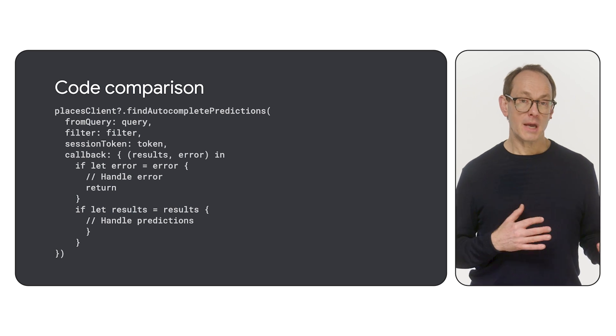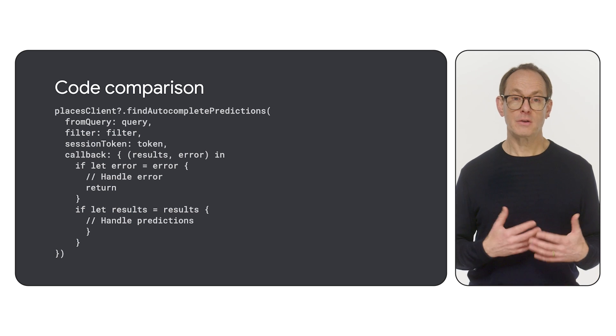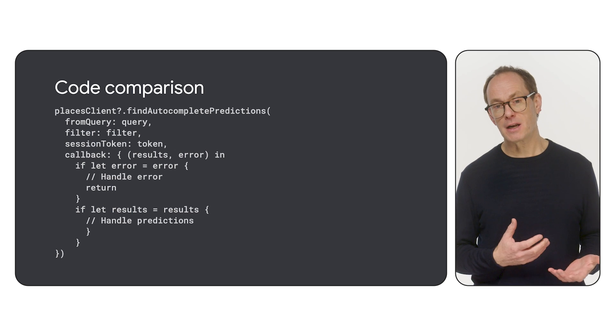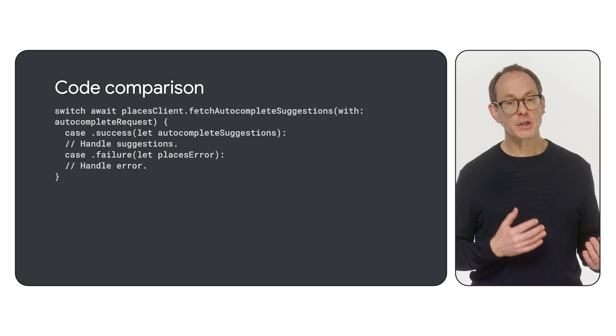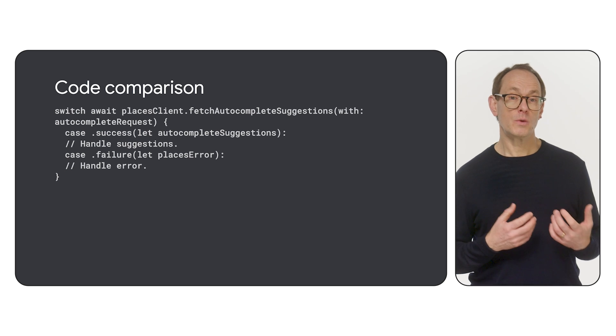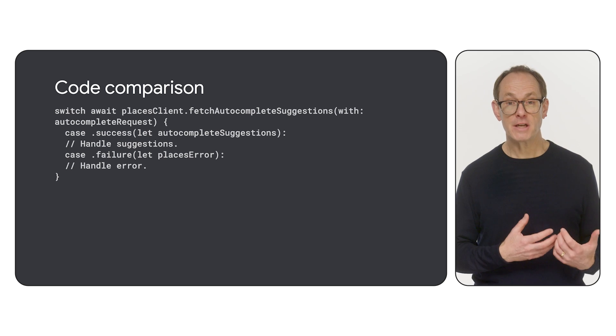Let's see how a typical autocomplete implementation might look with the Places Swift SDK for iOS. You could begin by updating the autocomplete request flow. The old code shown here uses a callback to request autocomplete suggestions. Callbacks can add complexity to code structure and error handling. The new code employs a switch-await pattern instead. The request and response handling has been simplified with Swift language support for concurrency using an asynchronous task through placesClient.fetchAutocompleteSuggestions.